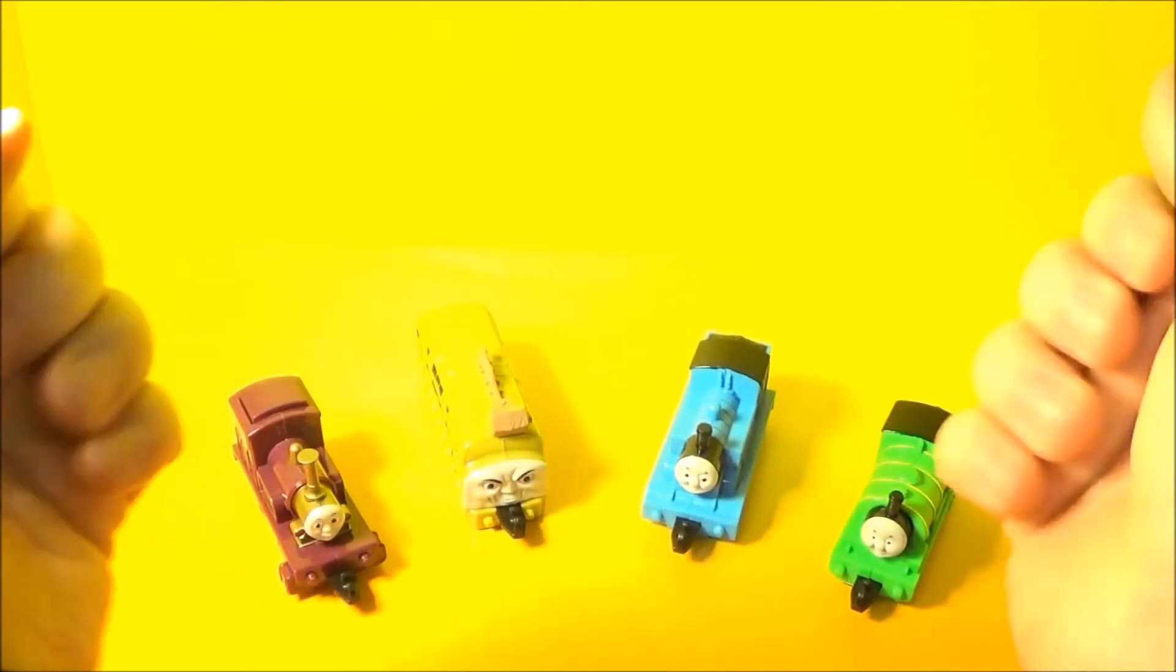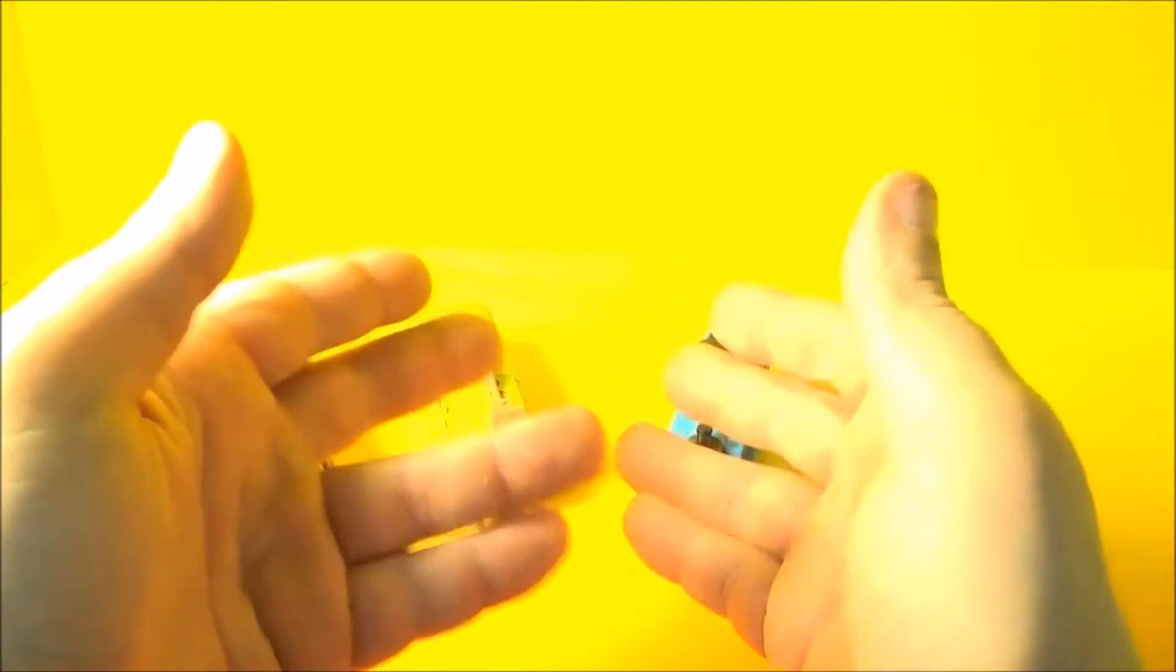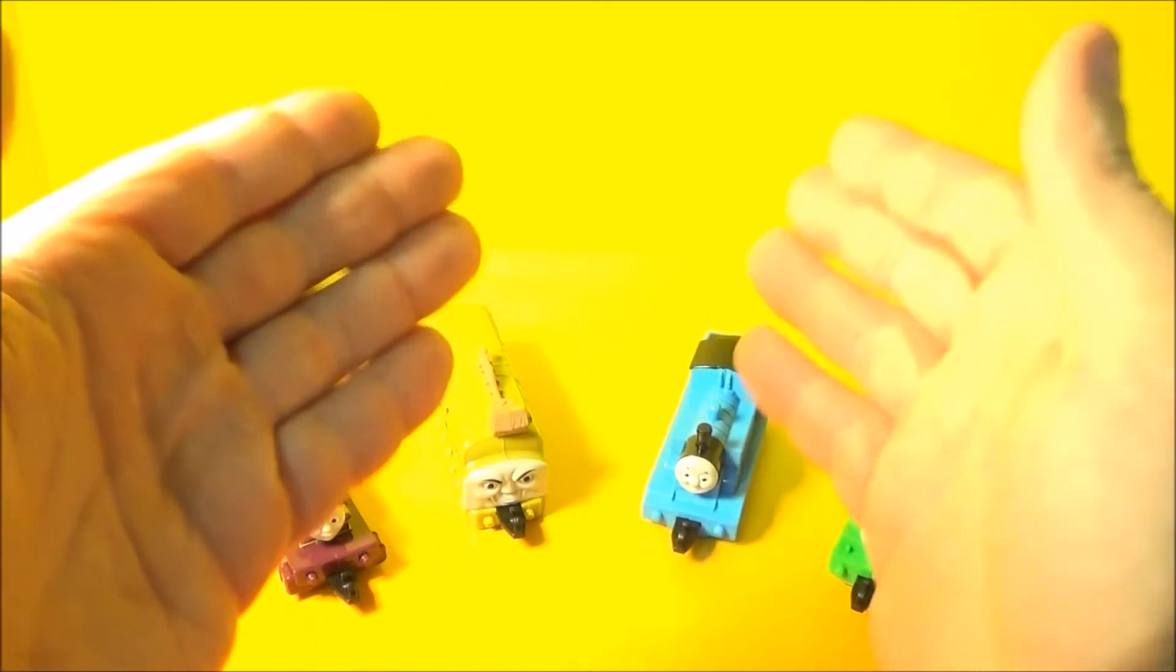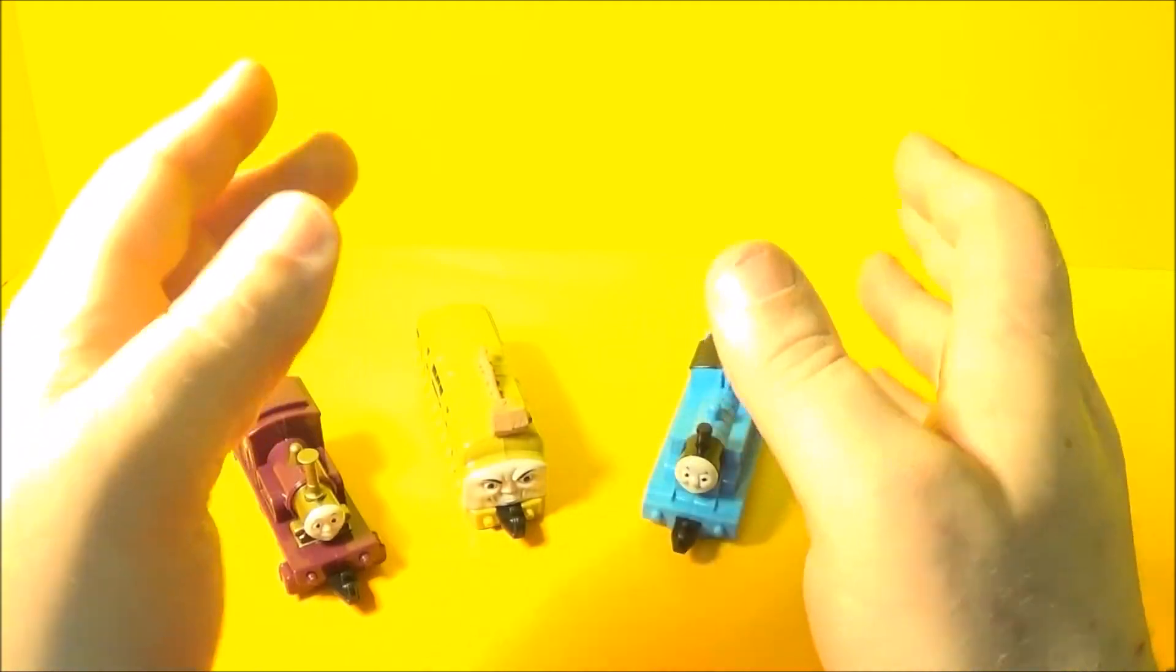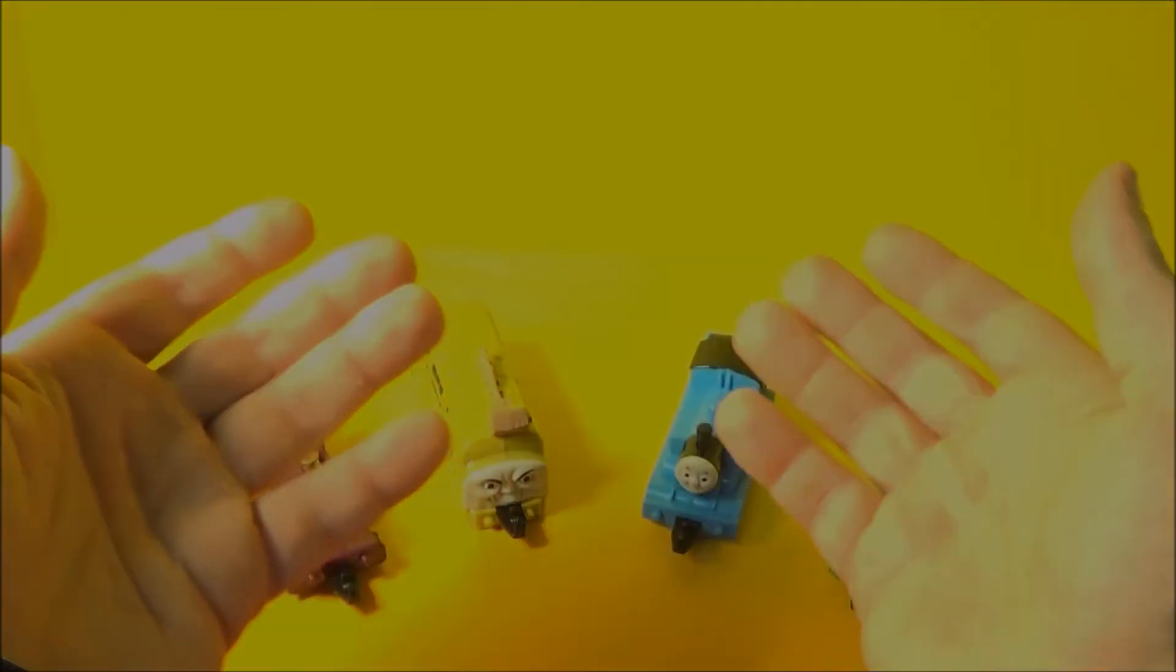Well that concludes another one of Jesse's Toy Reviews. I had a lot of fun with this Subway Kids Pack Thomas and the Magic Railroad set of four. This set came out in the year 2000. So please stay tuned for more videos coming real soon. Thanks for watching.